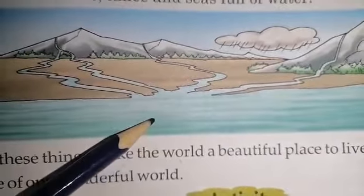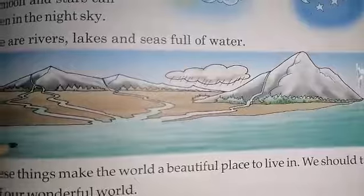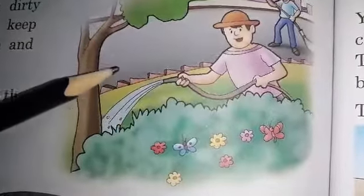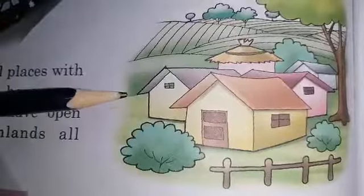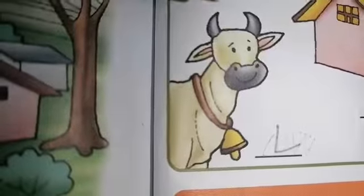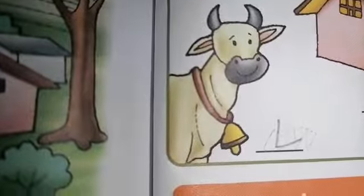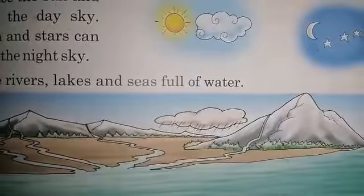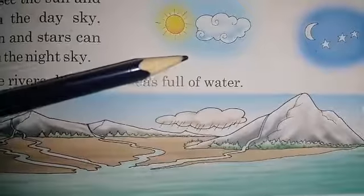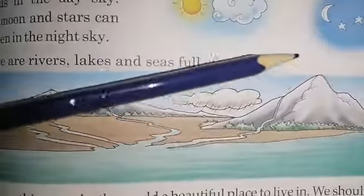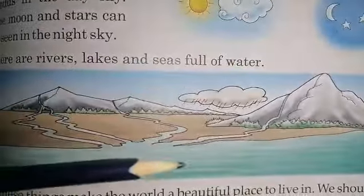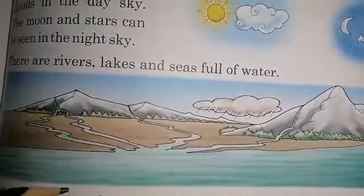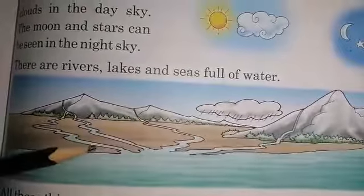So all these things — like plants, human beings, villages, cities, animals, sun, clouds, moon, stars, lakes, mountains, etc. — make the world a beautiful place to live in.